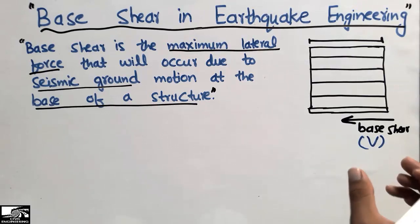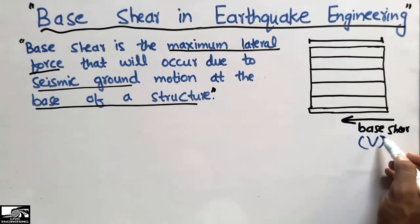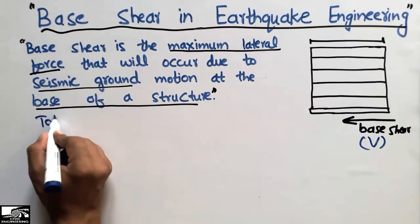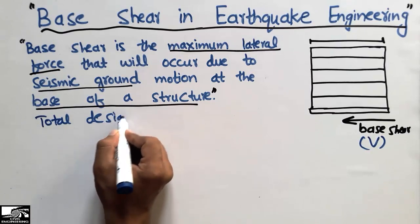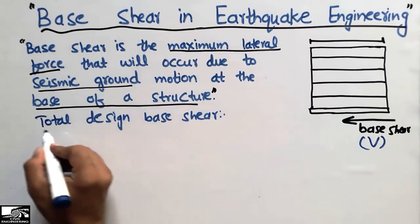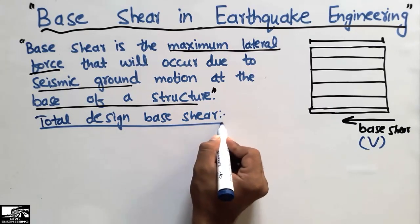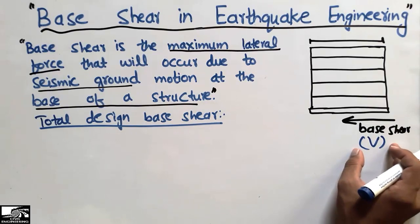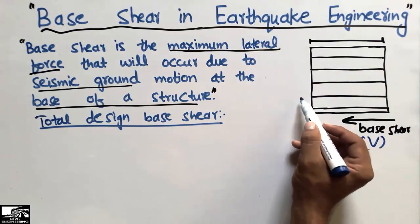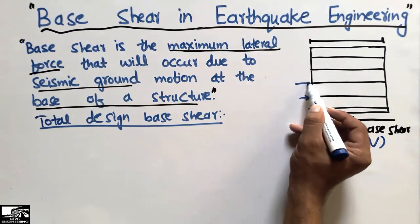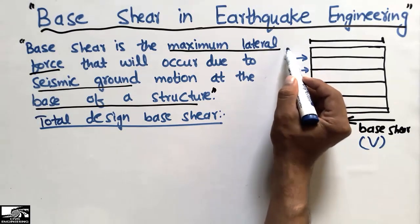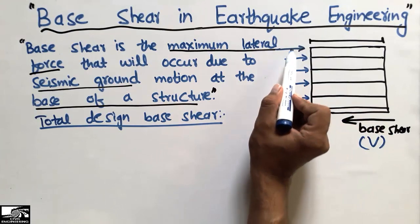Now we will draw a method showing how to find the base shear. The total design base shear formula: first we find the total design base shear for the building, and then we split this design base shear into different floors — according to the number of stories, we divide the force.